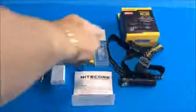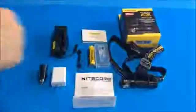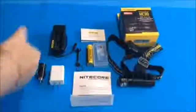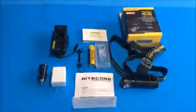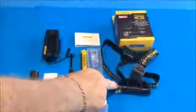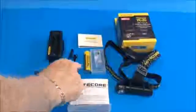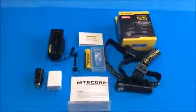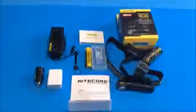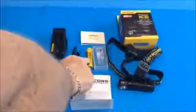This is a review of the Nitecore HC30 bundle and it comes with all its additional accessories in the kit. This is a miniature flashlight that comes with and uses this 18650 battery rated at 3400 milliampere hours. The battery is made by Nitecore.